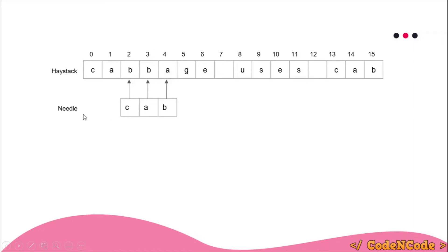The hash value of the needle is pre-computed once, since the needle never changes. Each time you need to compare a substring, all you have to do is find the hash value of that substring and compare the two hash values, which requires only O(1) time. So the comparison between the needle and the substring of the haystack no longer requires O(m) time — it requires O(1) time. That is a huge improvement.